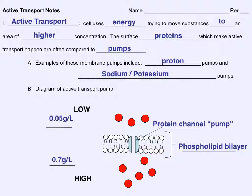At this point, you should copy the following information on your worksheet. Label the phospholipid bilayer. Label the protein channel pump. The circles represent the solute particles which are going to be using the pump to get through the cell membrane. The upper area is of low concentration. Its concentration is 0.05 grams per liter. The lower area is of higher concentration. Its concentration is 0.7 grams per liter.